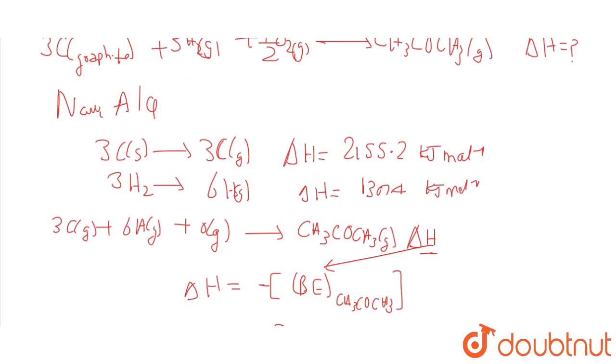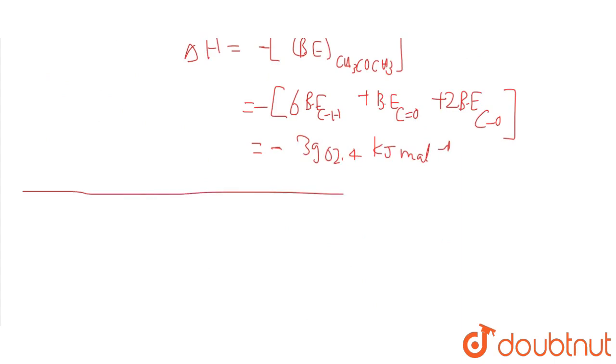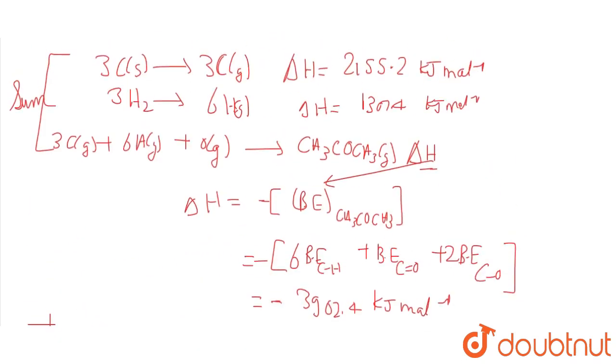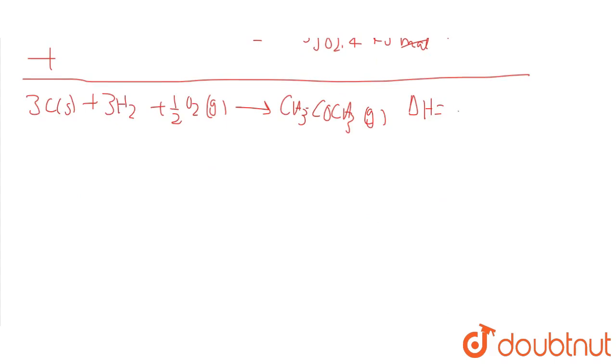If we sum these three equations, we have 3C solid plus 3H2 plus half O2 gas gives CH3COCH3 gas. Summing the delta H values gives minus 192.3 kilojoules mole inverse.